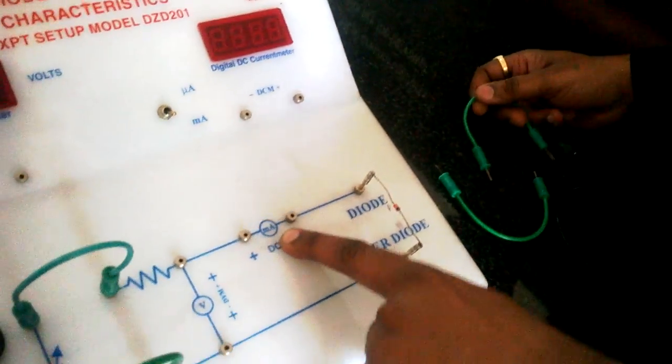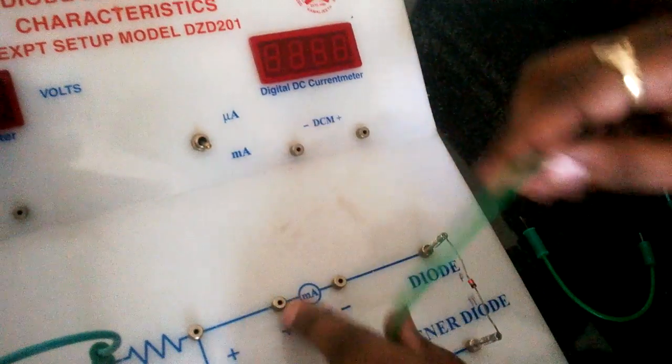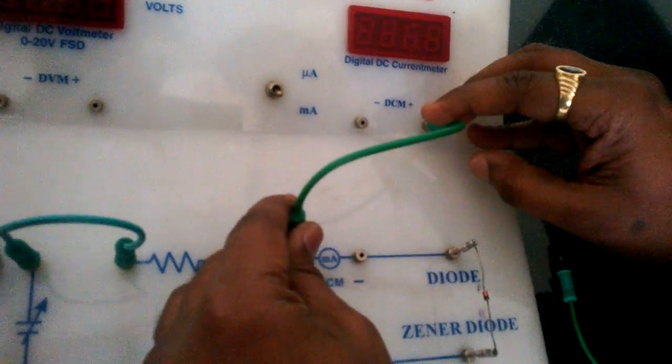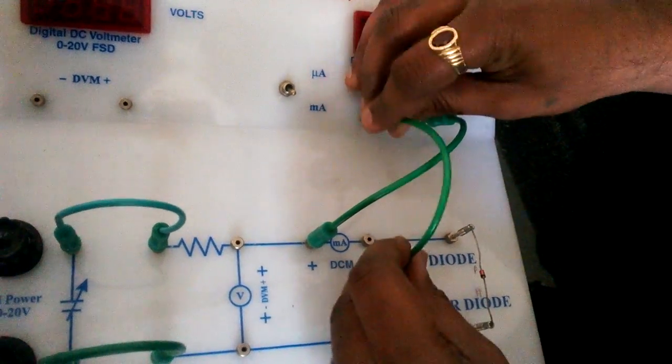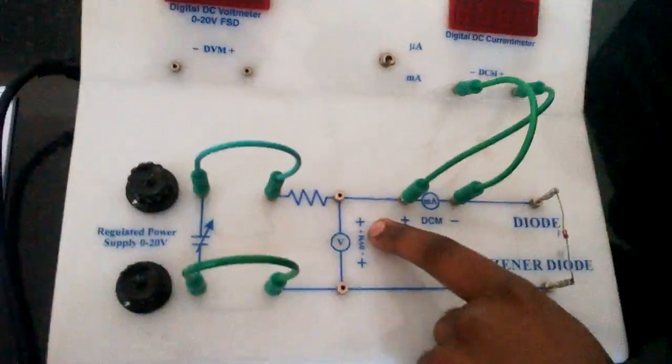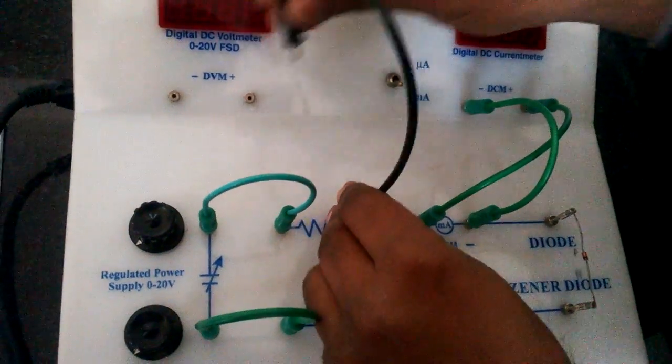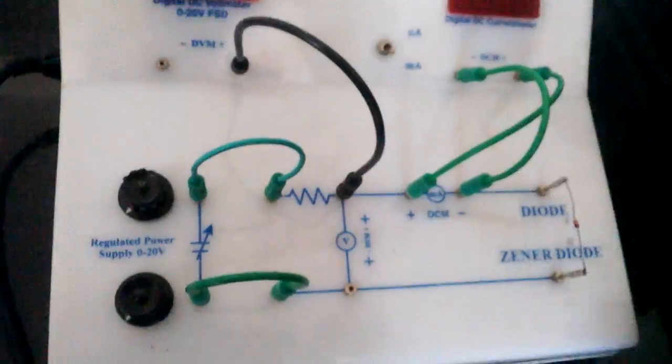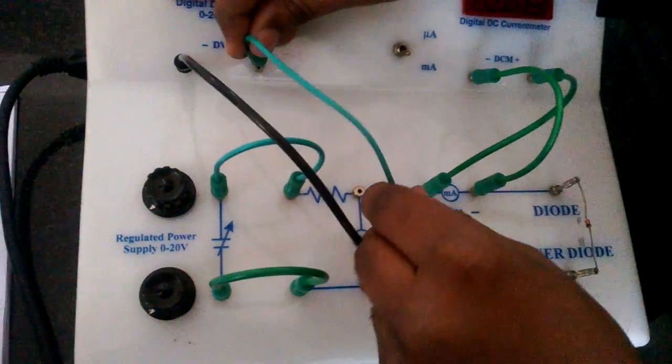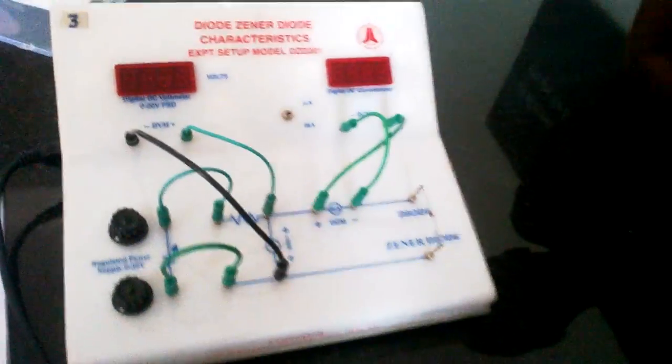Next, you see here, it's a milliammeter. Connect this ammeter in this place. Negative terminal to negative terminal, positive terminal to positive terminal. This is voltmeter. So, this connection is done.